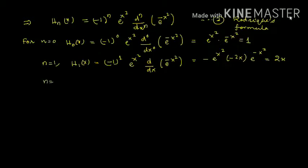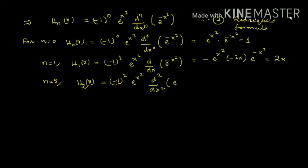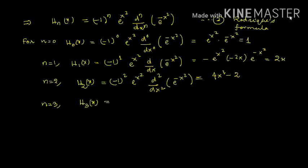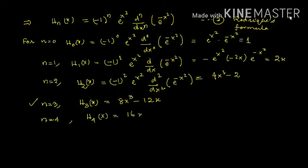For n=2: H2(x) = (-1)² · e^(x²) · d²/dx²(e^(-x²)) = 4x² - 2. For n=3: H3(x) = 8x³ - 12x — this is your homework, very important for short questions. For n=4: H4(x) = 16x⁴ - 48x² + 12.